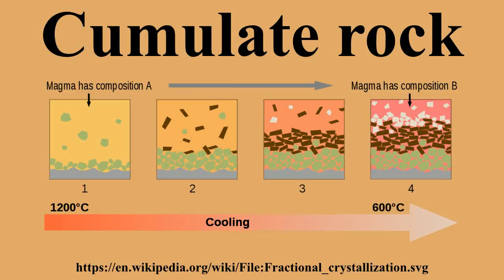The economic importance of cumulate rocks is best represented by three classes of mineral deposits found in ultramafic to mafic layered intrusions: silicate mineral cumulates, oxide mineral cumulates, and sulfide melt cumulates. Silicate minerals are rarely sufficiently valuable to warrant extraction as ore. However, some anorthosite intrusions contain such pure anorthite concentrations that they are mined for feldspar, for use in refractories, glassmaking and other sundry uses.